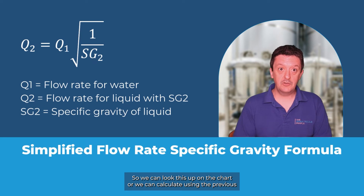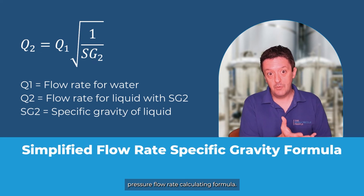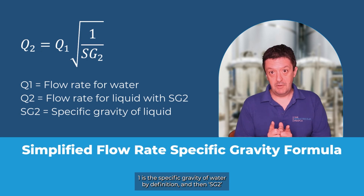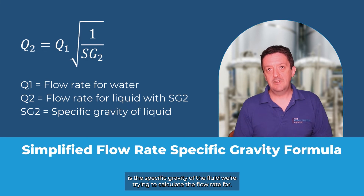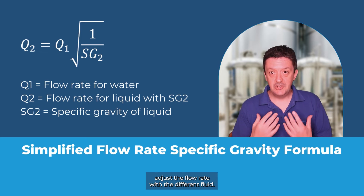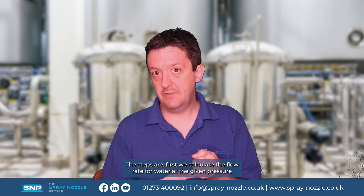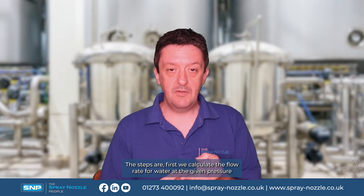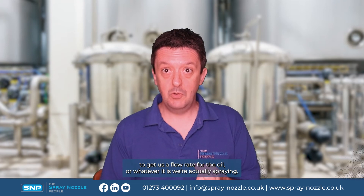So Q2 is the flow rate we're looking to calculate, and Q1 is the flow rate we know for water for this specific nozzle — which we can look up on the charts or calculate using the previous pressure flow rate formula. SG1 is the specific gravity of water, which by definition is 1, and SG2 is the specific gravity of the fluid we're trying to calculate the flow rate for. The steps are: first calculate the flow rate for water at the given pressure, then use this formula to adjust it to get the flow rate for the oil or whatever fluid we're actually spraying.